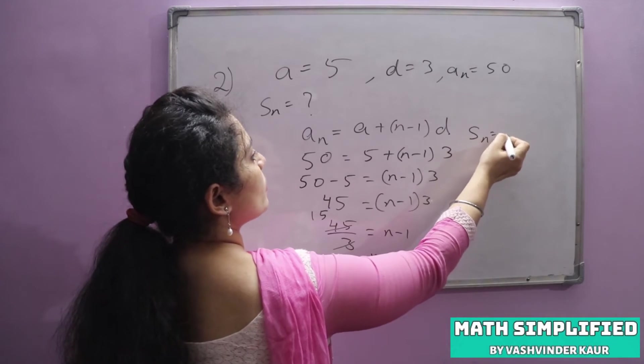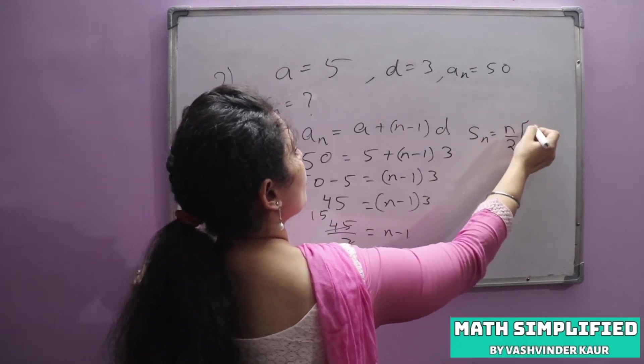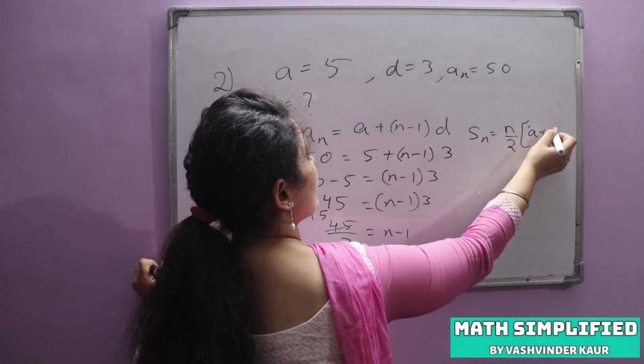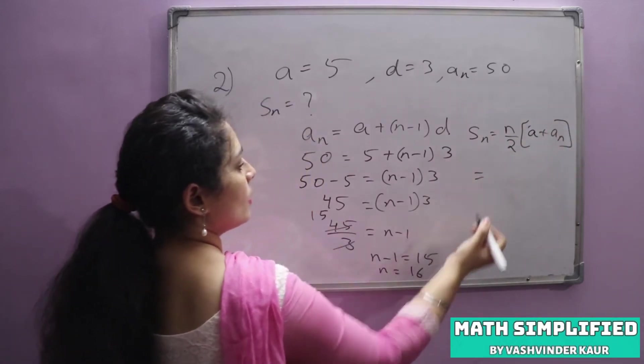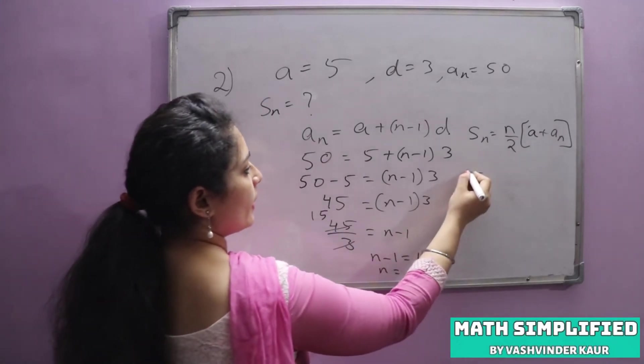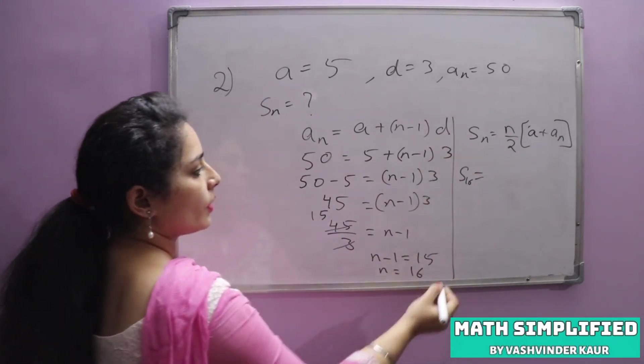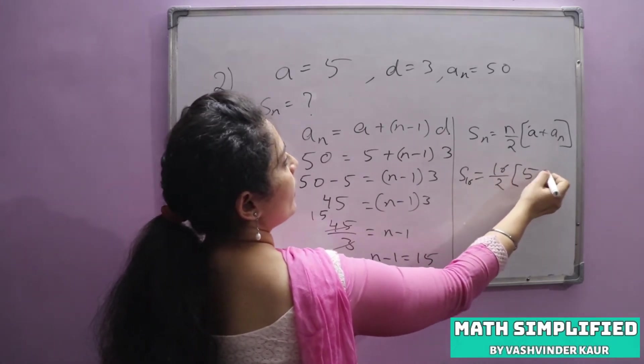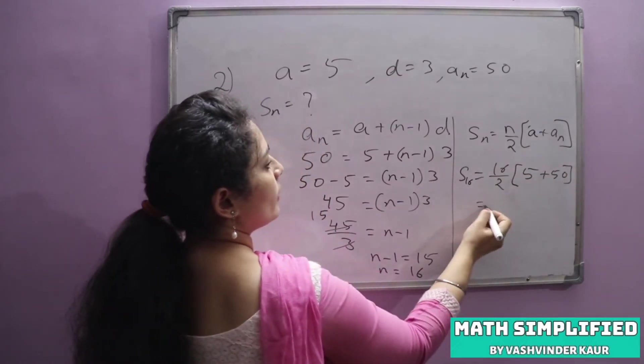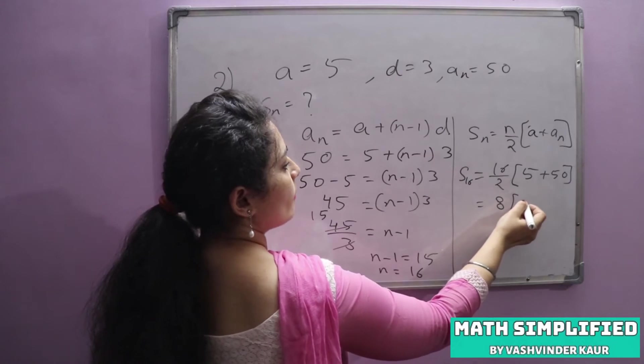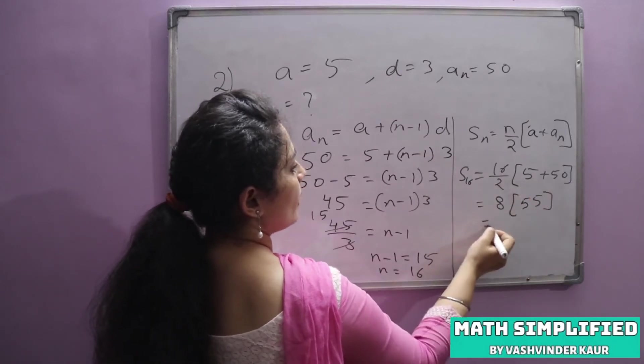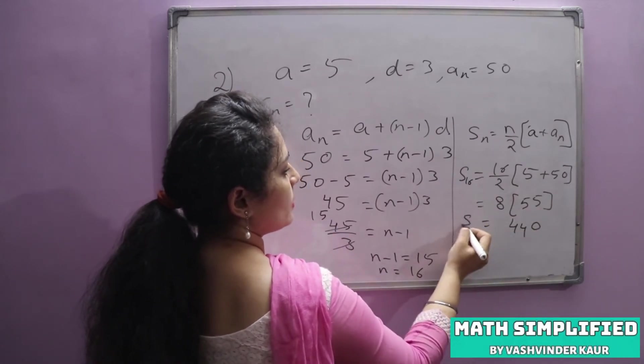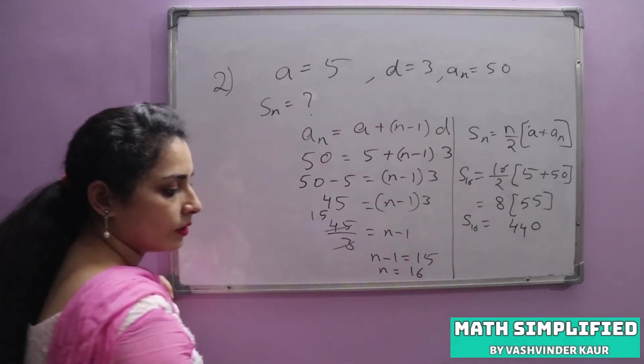Now we will find Sn. Sn is equal to n by 2, a plus an. Because an is given, we get S16. 16 by 2, a is 5, an is 50. That is 8 times 55. So S16 is 440.